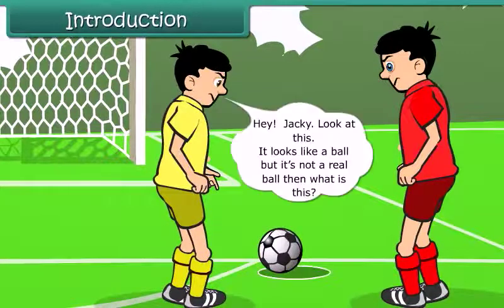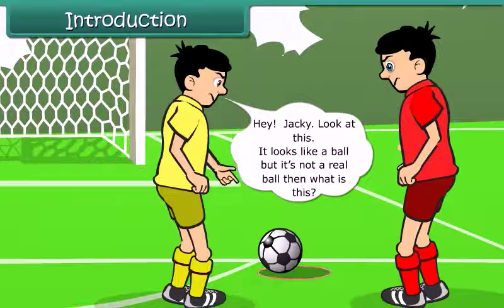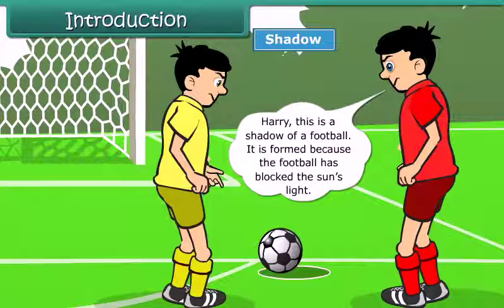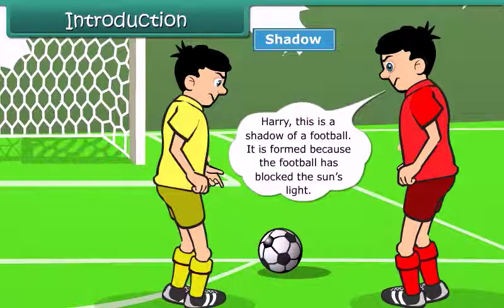Hey Jackie, look at this. It looks like a ball, but it's not a real ball. Then what is this? Harry, this is a shadow of a football. It is formed because the football has blocked the sun's light. So now let us learn more about shadow and its formation.